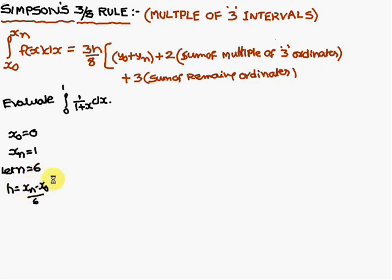h is equal to, the formula is xn minus x0 by 6. Therefore, h you are going to get as 1 by 6. Next, what you have to do...